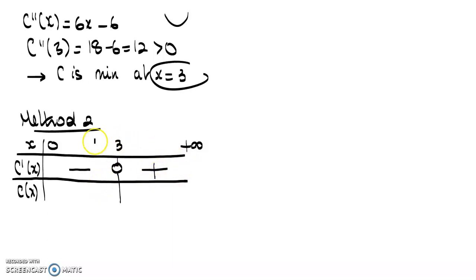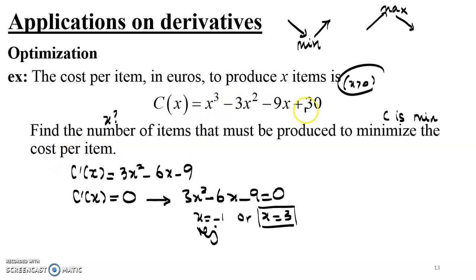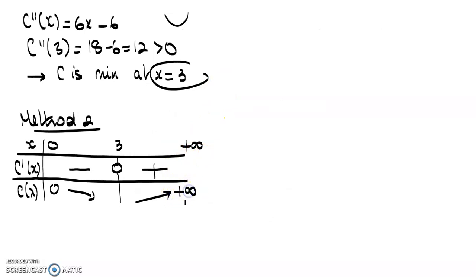Similarly, the derivative is positive over the interval from 3 to positive infinity. So the function is decreasing on the first interval and increasing on the second. We complete the table of variation by finding the images at the bounds and at the root of the derivative: C of 0 equals 3, at positive infinity the polynomial tends to positive infinity (dominated by x cubed), and we evaluate C at X equals 3 to find the minimum cost. Since the function decreases then increases at X equals 3, we confirm a minimum there.